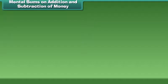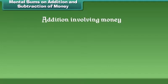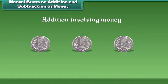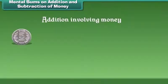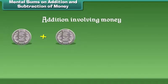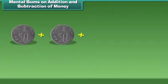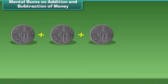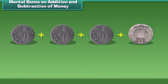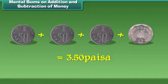Now let us learn about addition involving money. If I have 3 five-rupee coins, can you tell me the total rupees? Add 5 plus 5 plus 5, which is equal to 15 rupees. Now I have 3 fifty-paise coins and a 2-rupee coin, which is equal to 3 rupees 50 paise.